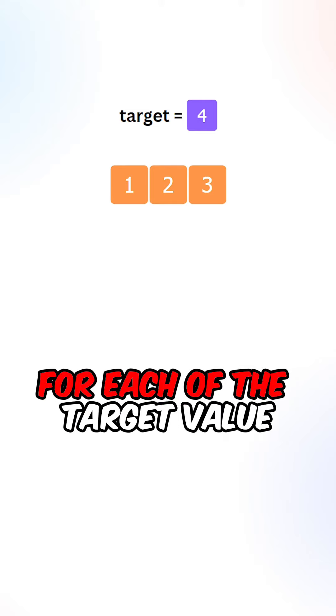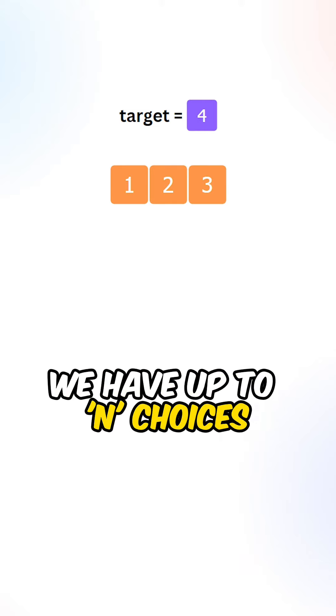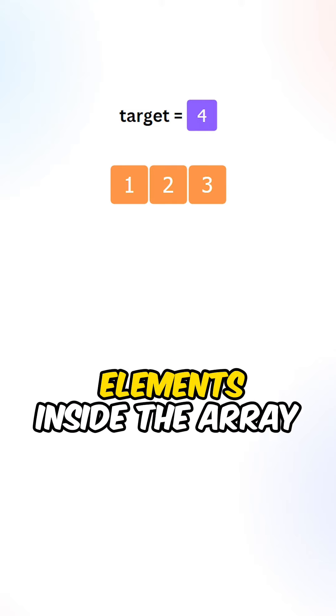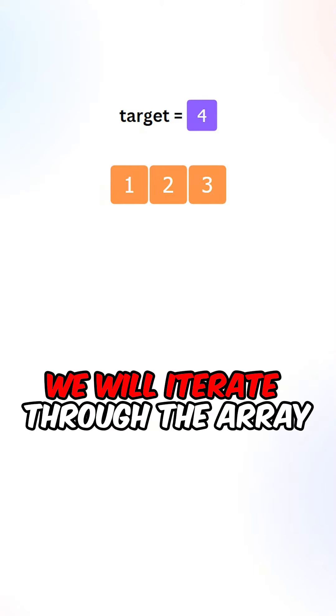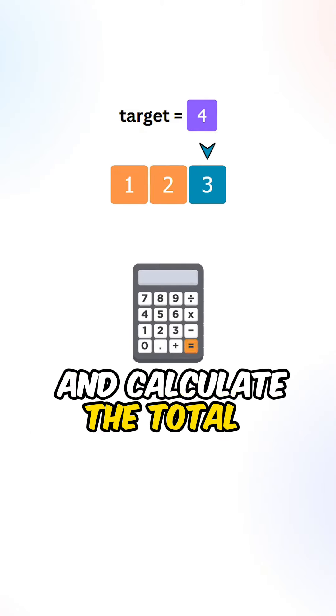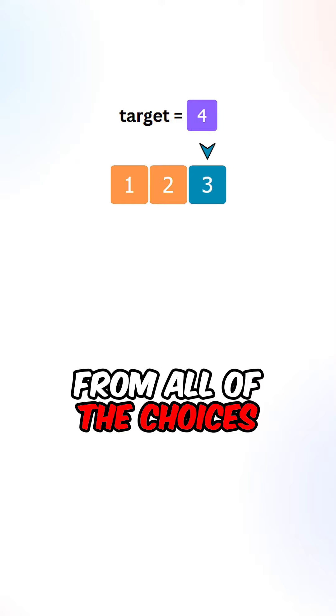Let's go over the thought process. For each of the target values, we have up to n choices, where n is the number of elements inside the array. We will iterate through the array and calculate the total number of combinations from all of the choices.